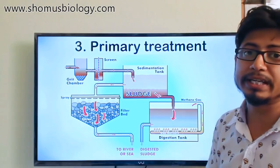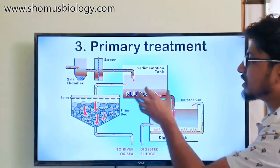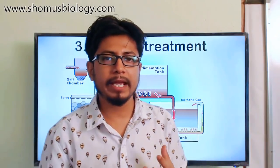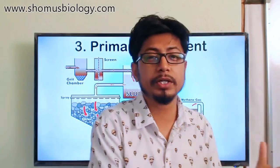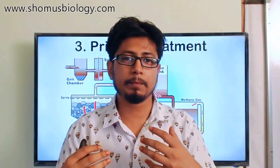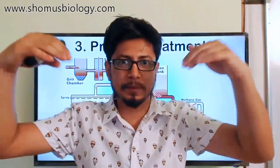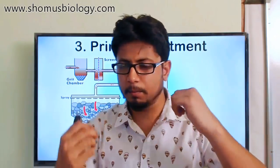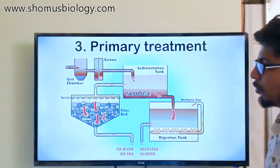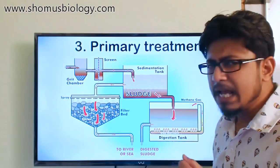As solids settle to the bottom of the tank, we call that material sludge. Sludge is the name for large or solid components in the wastewater that are not floating — they settle to the bottom due to their higher weight under gravitational force.